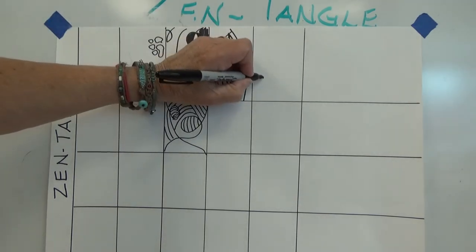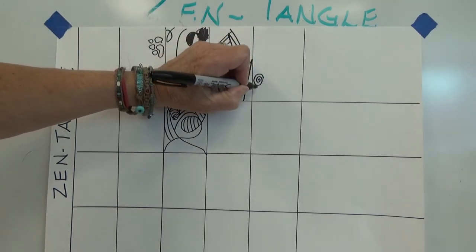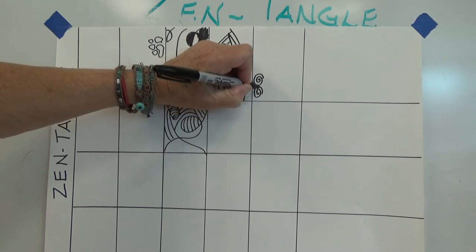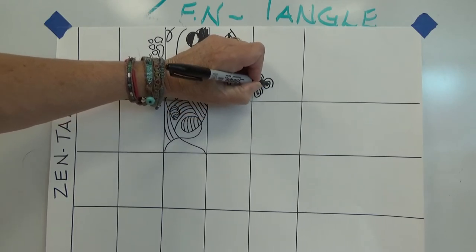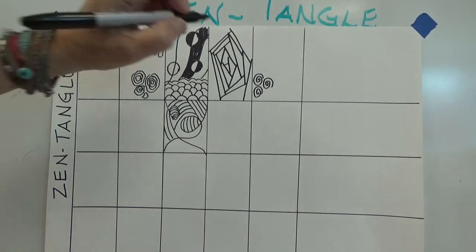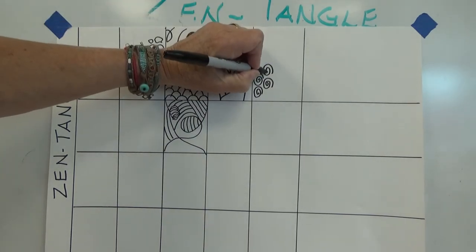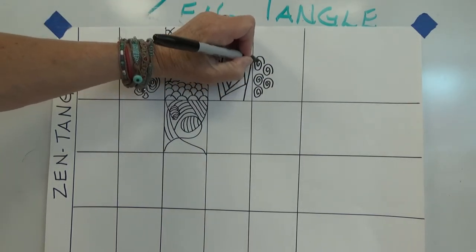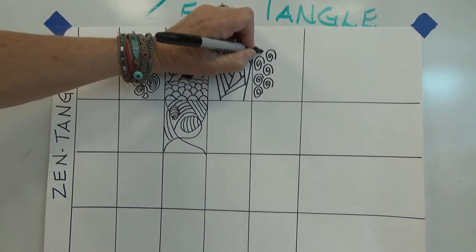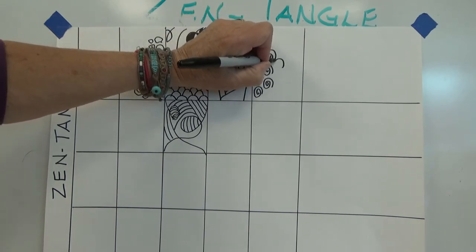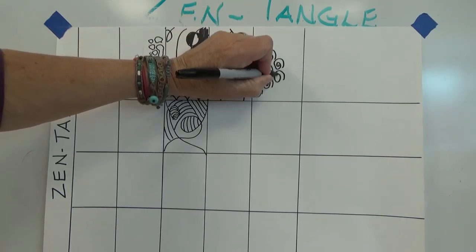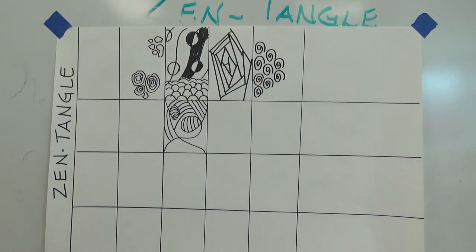You could just do swirls. So as I'm doing these, I want you to practice doing it too. I'm using a sharpie marker. I hope you will, but you could practice with pencils. Oh, there are so many of them we could do.